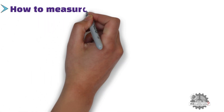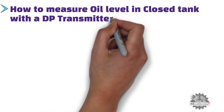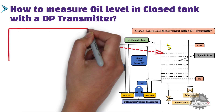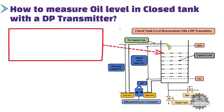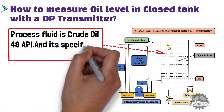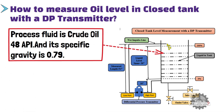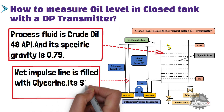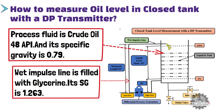Now, how to measure oil level in a closed tank with a DP transmitter? Let's assume the process fluid is crude oil 48 API, with a specific gravity of 0.79. Let's also assume that the wet impulse line is filled with glycerin, and its specific gravity is 1.263. The remaining conditions are the same as the previous example: the DP transmitter is installed 10 inches below the 0% baseline, and the height of the wet impulse line is 54 inches. Now let's go to the calculation table.